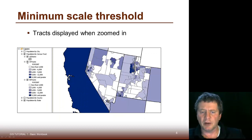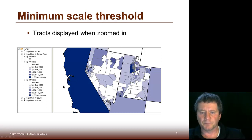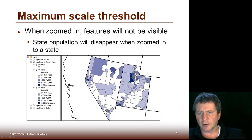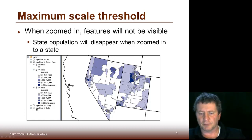But then when you zoom in, these would turn on and now you're looking at a much closer area. We could also turn the other layers off when we get in far enough. For example, population by state would be turned off when we got close enough to look at population by county.